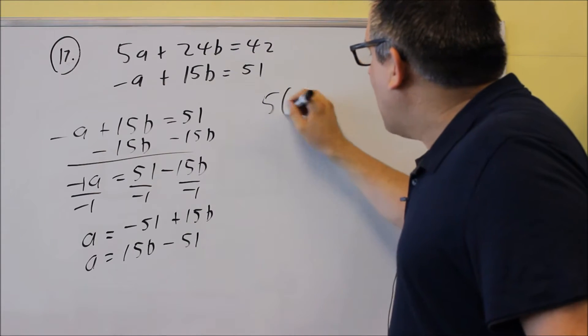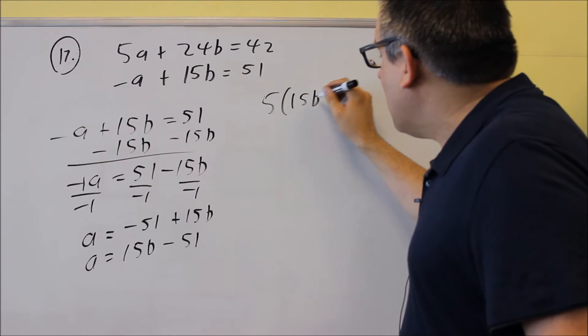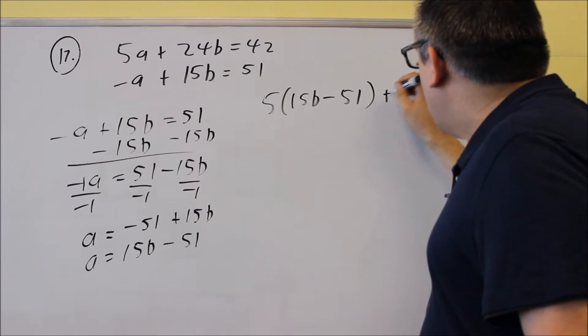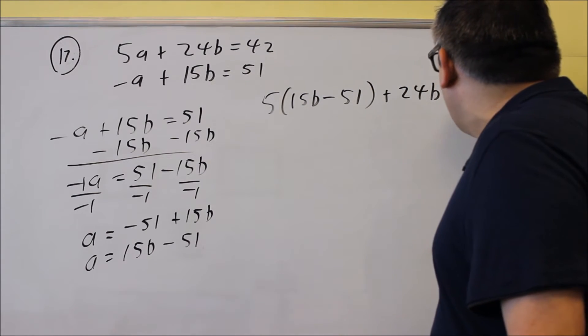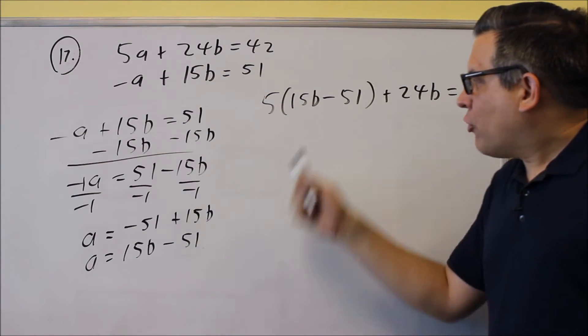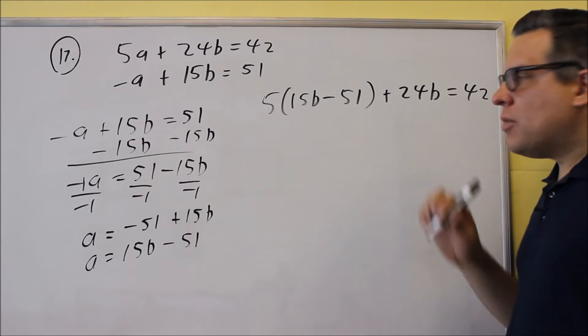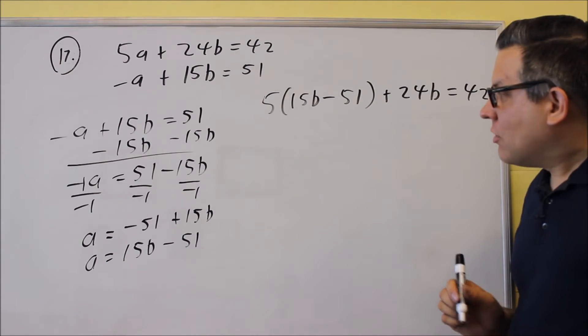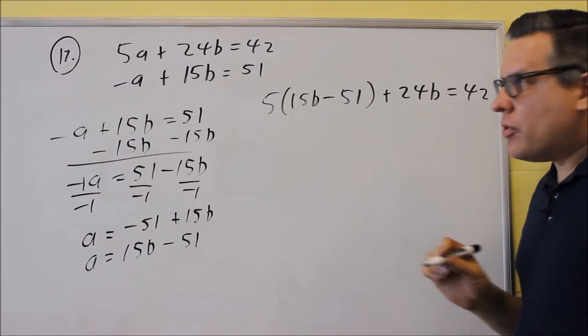So we're going to put, instead of the a here, I'm going to put 15b minus 51 and I have plus 24b equals 42. So in that one step there, I've taken out the a, replaced it with a b, so now you notice that b is the only variable that's left. Okay, so now we're just going to solve this for b.